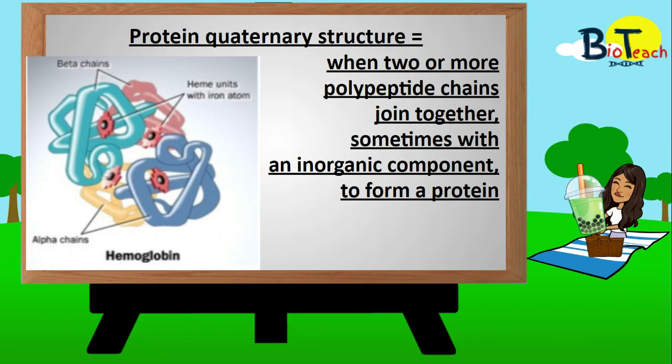The last part you need to know about is the quaternary structure. Some complex proteins are only functional when they occur as a group of polypeptide chains. By definition, a quaternary structure protein is when you have two or more polypeptide chains joined together. This diagram shows hemoglobin as an example — it is a quaternary structure made up of two alpha chains and two beta chains, each of which enclose a heme group. The structure of quaternary proteins is maintained by the same sorts of interactions as those involved in the tertiary structure.